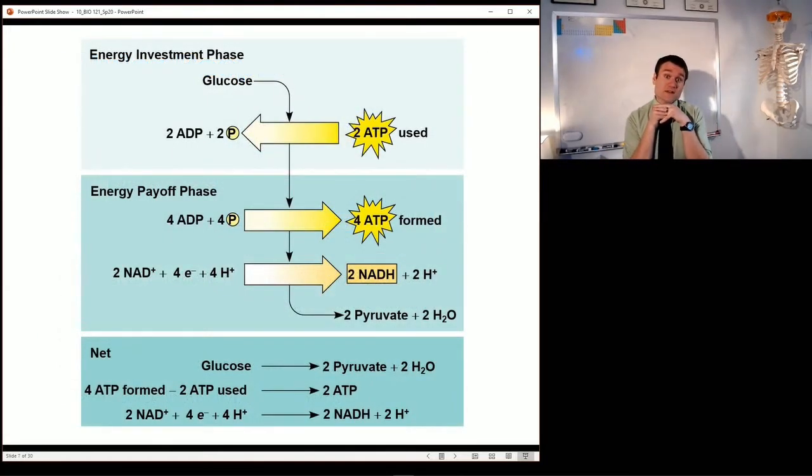So glucose enters the energy investment phase of glycolysis in which it is broken down. We invest 2 ATP at the beginning, that's the investment, but then we enter the energy payoff phase of glycolysis where we make 4 ATP, so we say 2 net ATP.